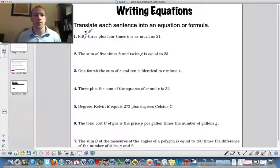So 53 plus 4 times a number b is as much as. Alright, so that's like our equal sign. Is as much as 21. So that's basically our equation right there. 53 plus 4b equals 21. Later we'll be solving this.